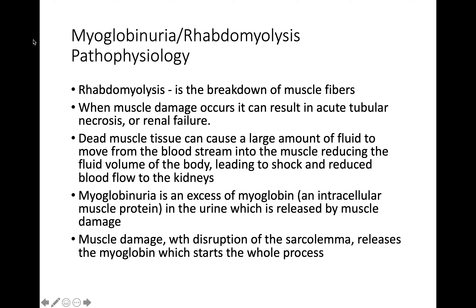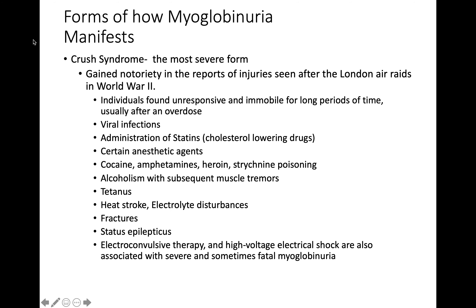When muscle damage occurs, the protein pigment myoglobin is released and filtered through the kidneys. Myoglobin can break down into harmful compounds, resulting in acute tubular necrosis (ATN), which is renal failure. It can also reduce the fluid volume of the body, leading to shock and reduced blood flow to the kidneys. Muscle damage with disruption of the sarcolemma — the cell membrane of a muscle cell — releases myoglobin and starts the whole process.